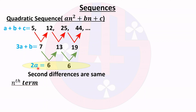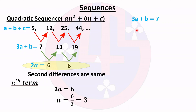Now we solve these equations. From 2a = 6, a = 6/2 = 3. Then substituting into 3a + b = 7: 3 × 3 + b = 7, so 9 + b = 7, giving b = 7 − 9 = −2.